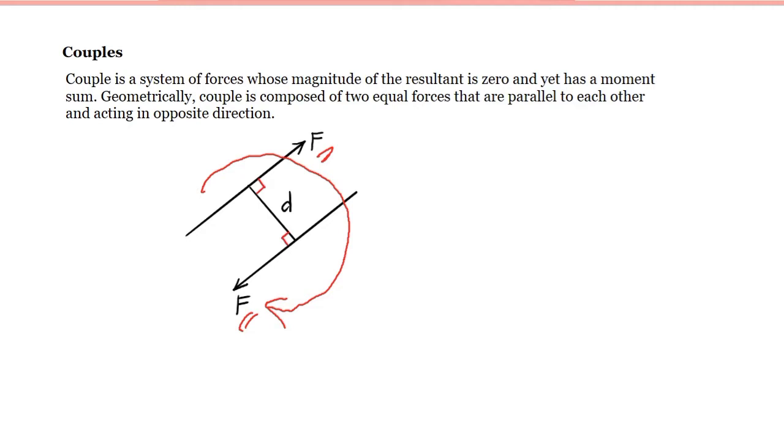The magnitude of the couple is given in this formula: we have the force multiplied by the perpendicular distance. These forces here have equal magnitude. For example, if this is 2 kN, then this is also equal to 2 kN but in opposite direction.